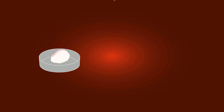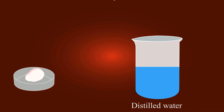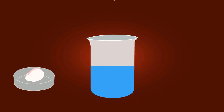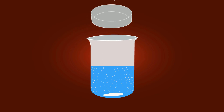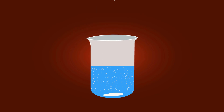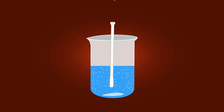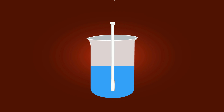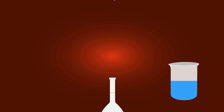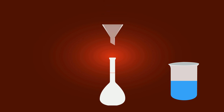Now put this sodium chloride — 58.5 grams of NaCl — into the distilled water. Put the stirrer and make a homogeneous mixture of NaCl. Now pour the solution into a measuring flask with the help of a funnel.